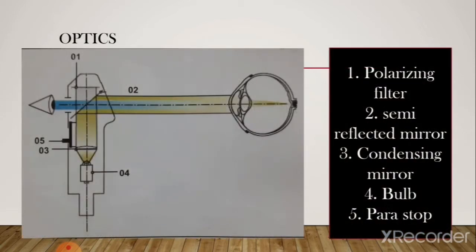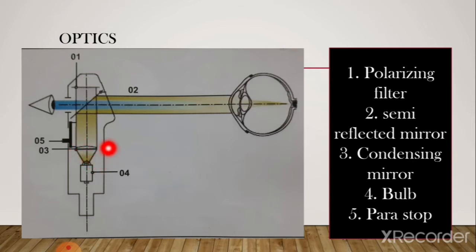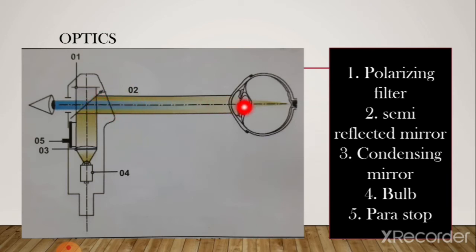Here you can see the optics of the retinoscope. This is the filament from where light is emitted. The light goes onto the condensing lens, gets refracted, and the light rays become parallel to each other. They then reflect off the plane mirror, which is inclined at a specific angle, and the rays exit the retinoscope and enter the patient's eye.